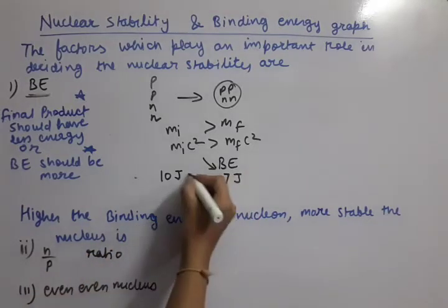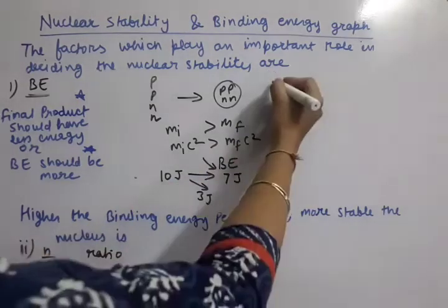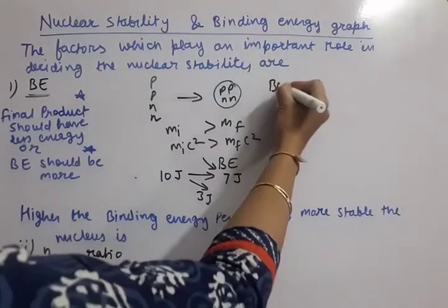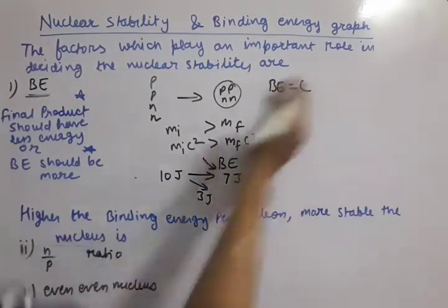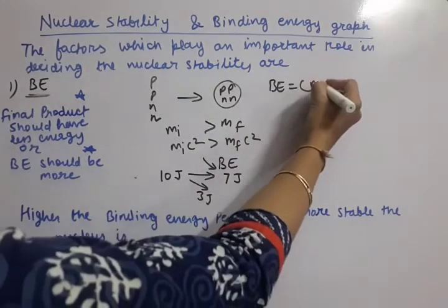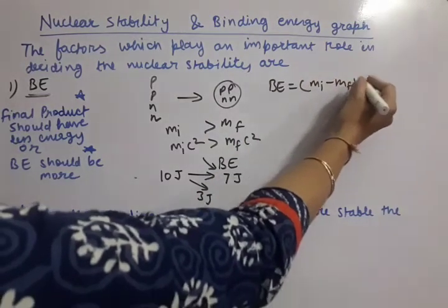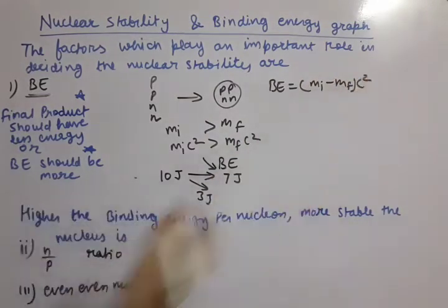This 3 joule energy released in the event is called binding energy. The binding energy formula is: binding energy equals initial energy minus final energy. This is the binding energy formula we have already discussed.